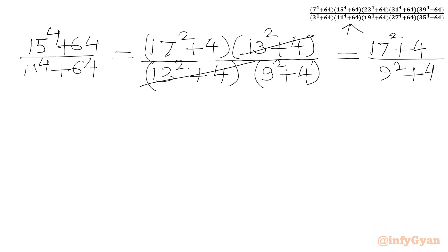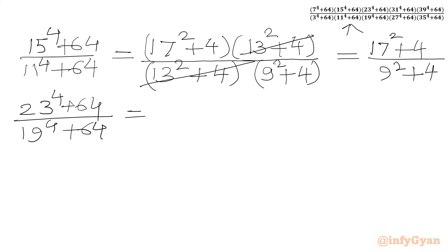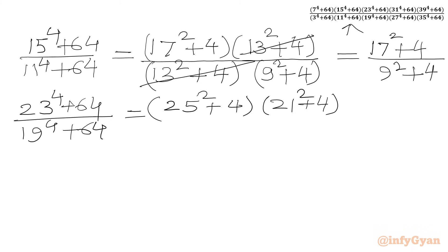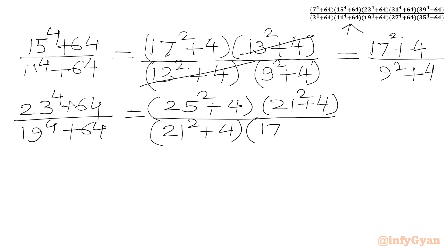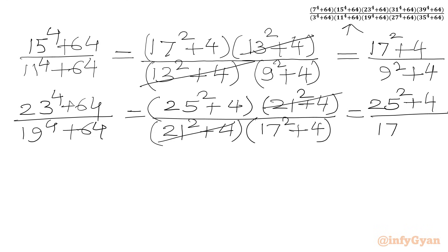The third ratio: 23⁴ + 64 divided by 19⁴ + 64. With a = 23: (23 + 2) = 25, so 25² + 4; (23 − 2) = 21, so 21² + 4 in the numerator. In the denominator with a = 19: (19 + 2) = 21, so 21² + 4; (19 − 2) = 17, so 17² + 4. We cancel (21² + 4), giving (25² + 4) divided by (17² + 4).